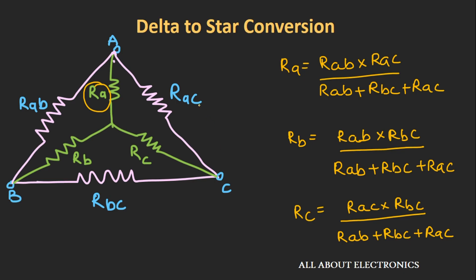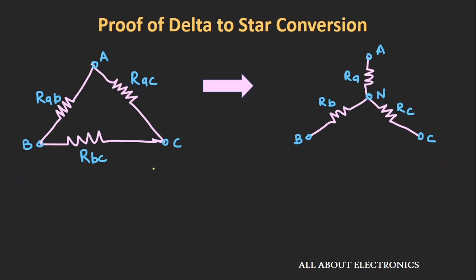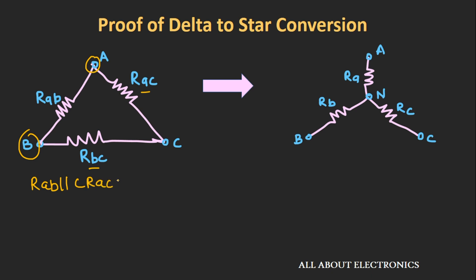So in this way, we can convert any delta network into the equivalent star network. The formula is: just multiply the adjacent resistors and divide by the total resistance of the delta network. Now let's derive these expressions. Before we start the derivation, we assume that this delta network and the equivalent star network are not connected to any other network — meaning nodes A, B, and C are open circuited. The resistance between node A and B can be given as RAB in parallel with the series combination of RAC and RBC, that is RAC plus RBC.